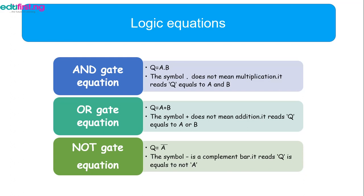Then for the OR gate, we have Q equals A plus B, which simply means that the plus sign does not mean addition. It means that it equals either A or B.